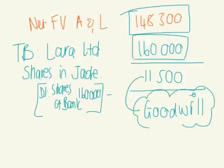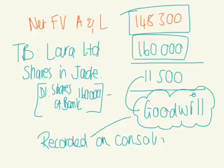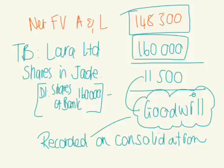This goodwill amount is only recorded on consolidation — it only exists in the consolidated financial statements and is not recorded in the accounting records of the subsidiary or the parent. Also note that in this question, adjustments for fair values are made on consolidation, meaning the fair value adjustment is made in the acquisition analysis and we have a BCVR entry for it. The alternative is where adjustments are made in the subsidiary's accounts, in which case there would be no BCVR entries.